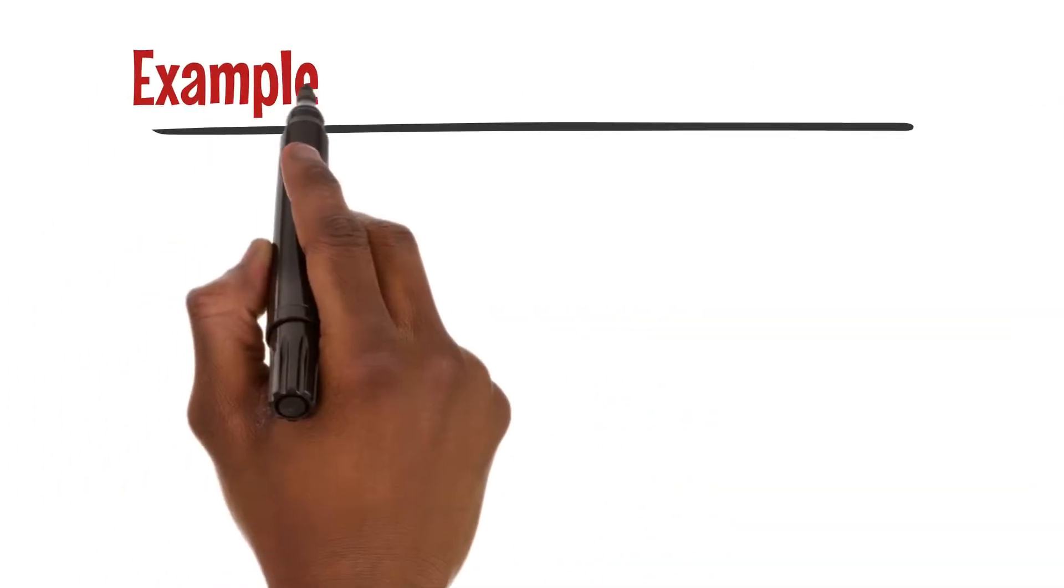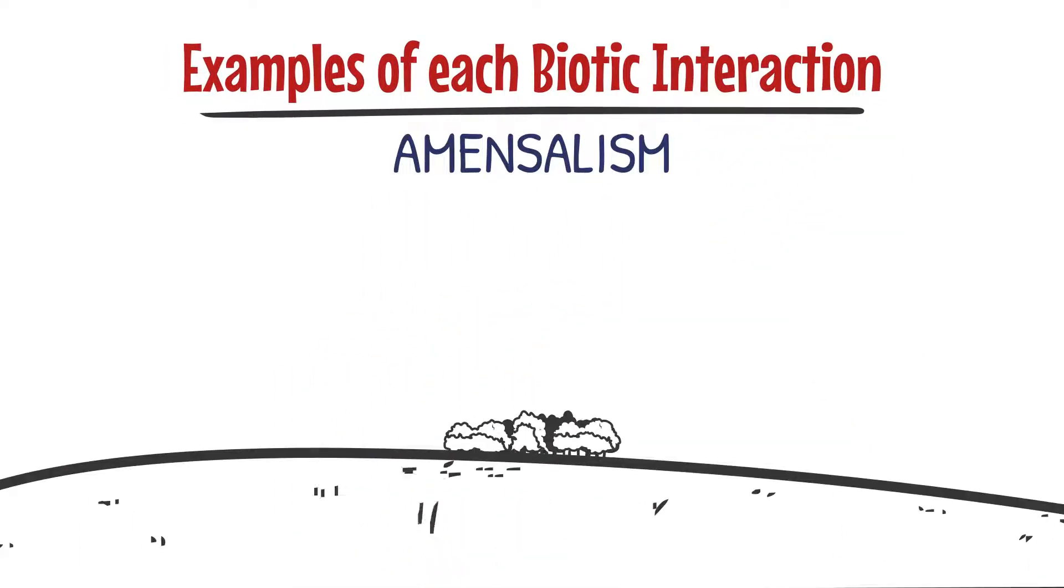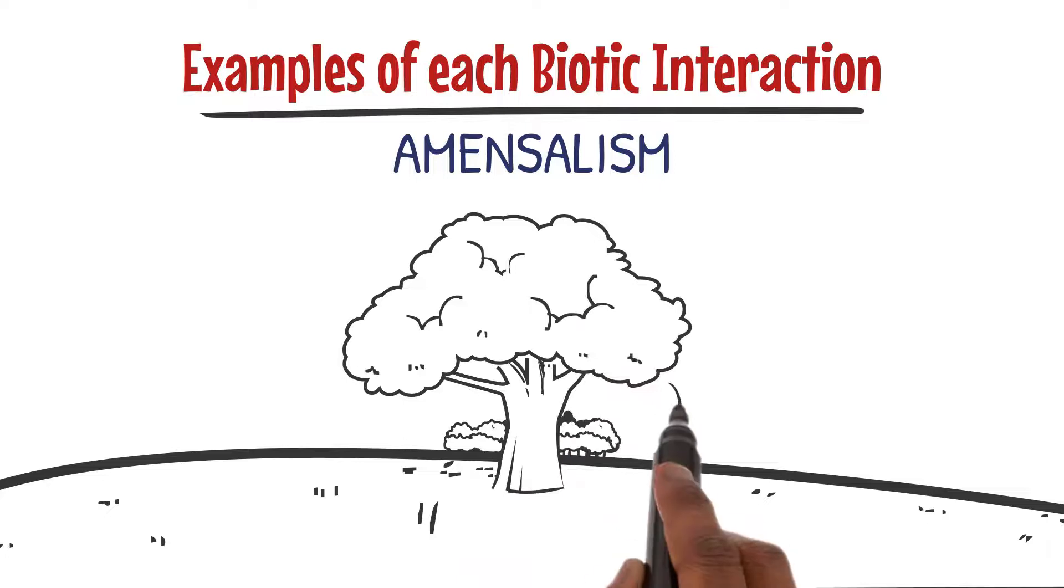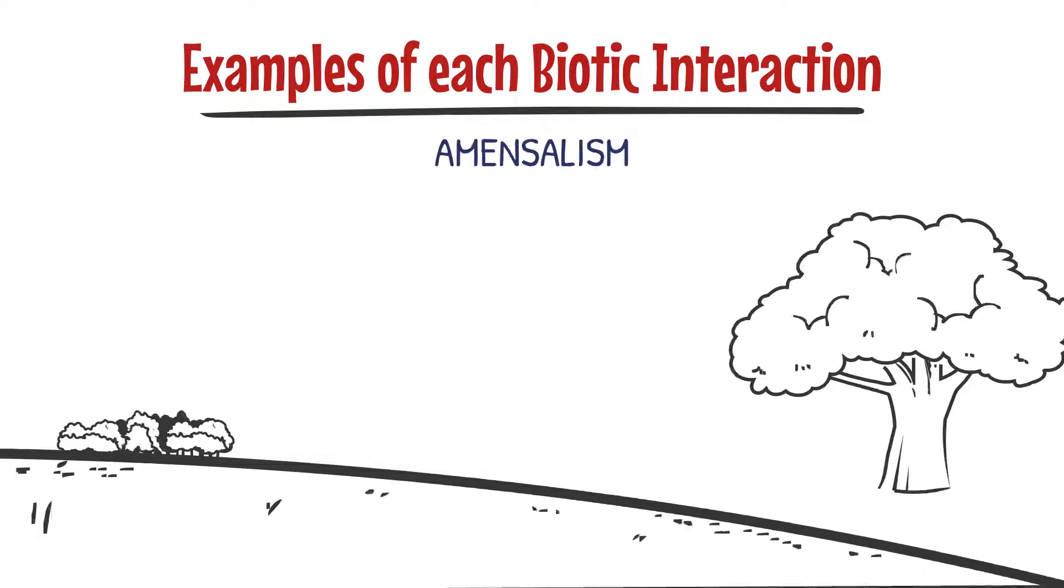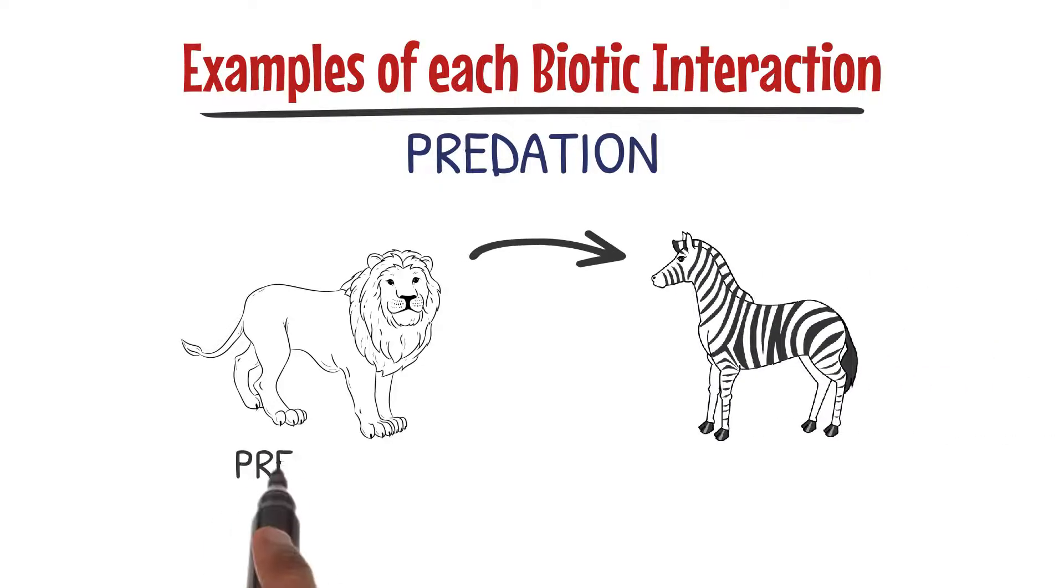Amensalism: picture a big tree shading out smaller plants beneath it, preventing their growth. Predation: imagine a lion hunting down a zebra for its meal, a classic example of predator and prey.